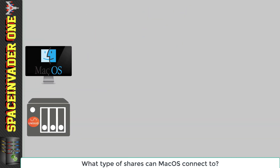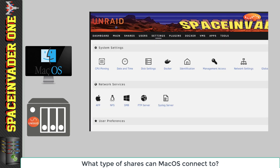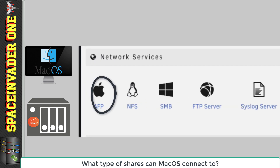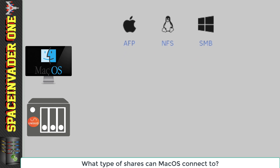Before we start, let's look at the types of shares you can create on Unraid that Mac OS can connect to. On the Unraid web UI, under Settings and Network Services, we can see AFP, NFS, and SMB. You'd be forgiven for thinking that if you're using an Apple you should use AFP, Linux should use NFS, and Windows should use SMB. But actually, using Mac OS, we can connect to any one of these sharing protocols.